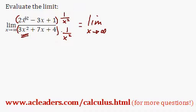We're going to have to expand this. 2x squared times 1 over x is just 2, negative 3x times 1 over x squared is negative 3 over x, 1 times 1 over x squared is just 1 over x squared.